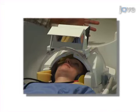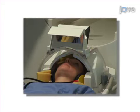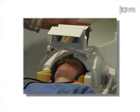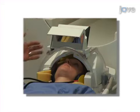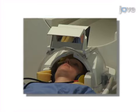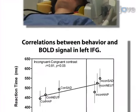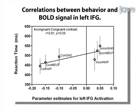Additionally, the subjects' eye movements are recorded with an eye tracker within the scanner in order to obtain a measure of attentional selection. Results are obtained that show inferior frontal gyrus activation based on analysis of the correlations of behavior and fMRI signal during the stimulus response task.